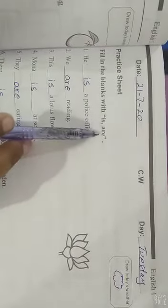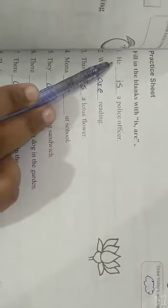Fill in the blanks with is and are. Okay, he is a police officer because he my past single hai.